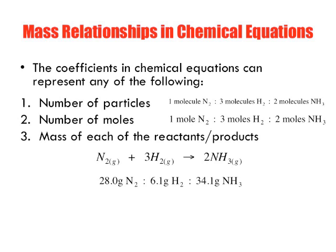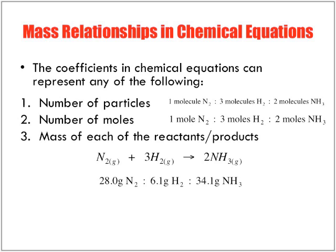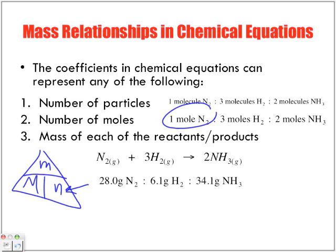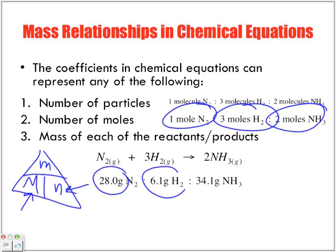How did I find the mass? Remember the relationship of molar mass is equal to mass divided by number of moles. If I know the number of moles and I know the molar mass because I can find that on the periodic table, I can multiply those two together to give me the mass ratio of each one of these molecules.